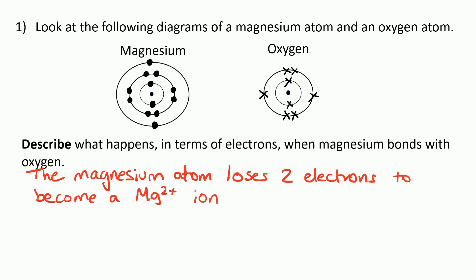There's no harm in saying that it does all of this to get a full outer shell and be stable. The oxygen atom has six electrons in the outer shell, so it's going to gain two electrons to become an O2- ion.